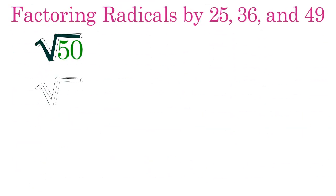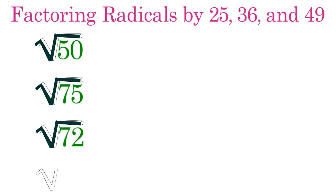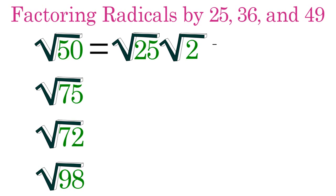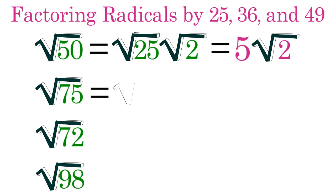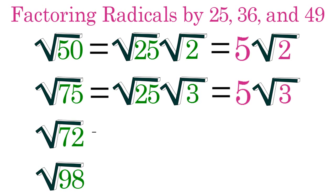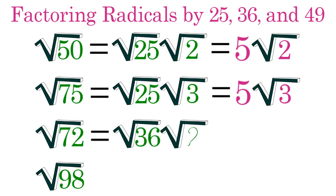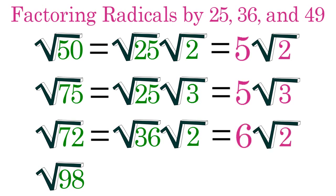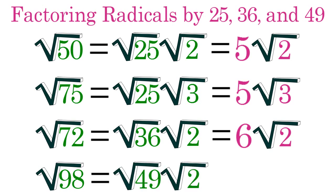Finally, you learned how to simplify radicals of four other numbers. Radical 50 equals radical 25 times radical 2, so this equals 5 radical 2. Radical 75 equals radical 25 times radical 3, which equals 5 radical 3. Radical 72 equals radical 36 times radical 2, which equals 6 radical 2. And radical 98 equals radical 49 times radical 2, so this equals 7 radical 2.